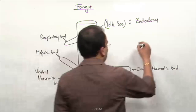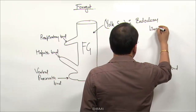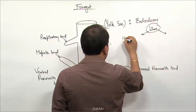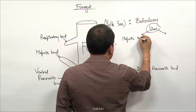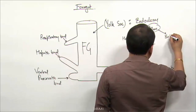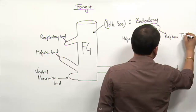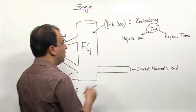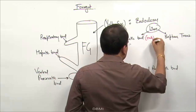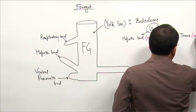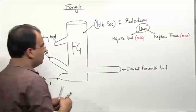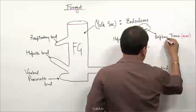When you say liver, there are two sources for the liver. One is the hepatic bud and one is the septum transversum.